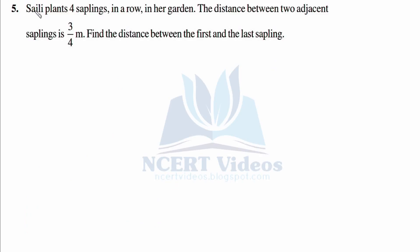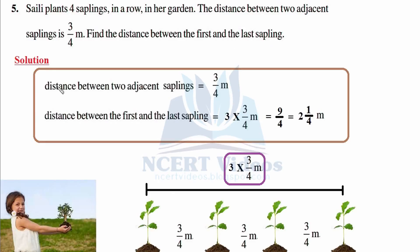Question 5 (word problem): Sally plants 4 saplings in a row in a garden. The distance between two adjacent saplings is 3/4 meter. Find the distance between the first and the last sapling. A sapling is a small plant. She placed them at a distance of 3/4 meter from each other.